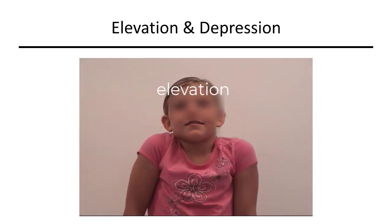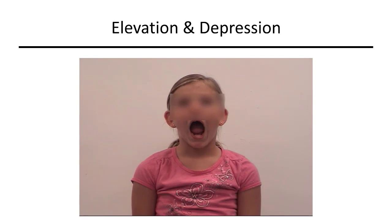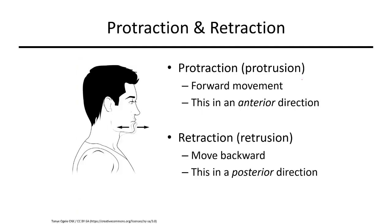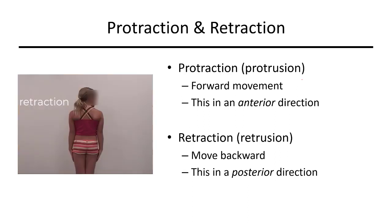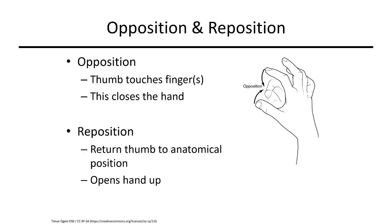Here we can see elevation and depression. Protraction occurs when you move your head forward keeping your jaw at the same plane; jutting forward is protraction and returning back is retraction, a posterior direction. Opposition and reposition are motions that occur with the fingers and thumb. Opposition is when you touch a finger to your thumb in a pinching motion; reposition is moving your fingers and thumb away from each other.